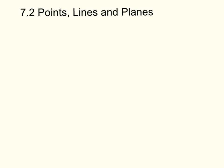In section 7.2, we're going to talk about points, lines, and planes. On page 441, in the gray box in the middle of the page, it says: Geometry is a mathematical system built on accepted facts, basic terms, and definitions.